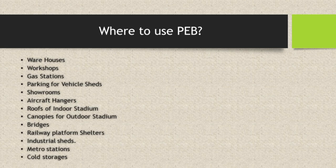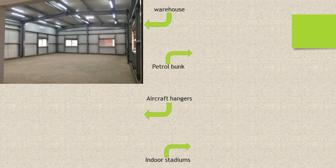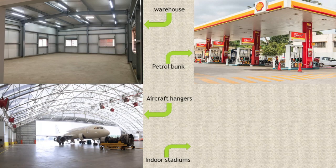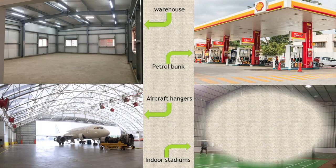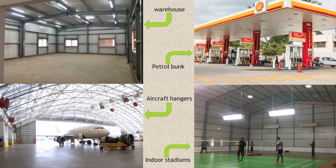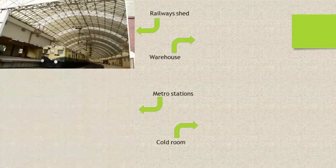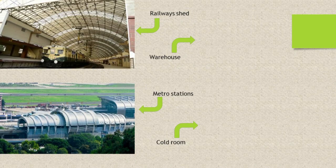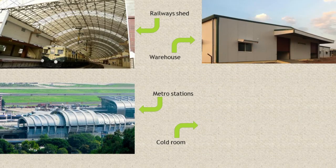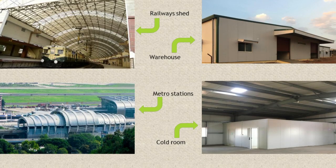Here are some images. The first image is a warehouse. The right image is a petrol pump. The third image is an aircraft hangar. Another image shows a roof with sheets and structures. There are also indoor stadiums with normal column-rafter construction and GI corrugated sheets. The next image shows a shed with an aerial view, and also a cold room where PEB is used.